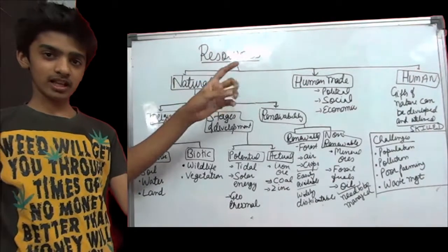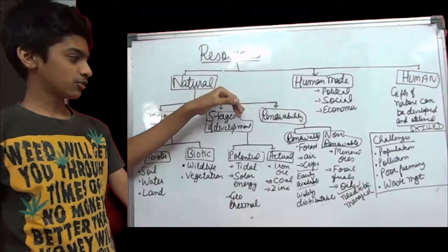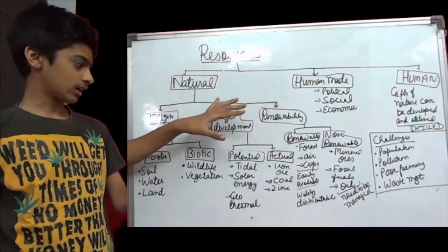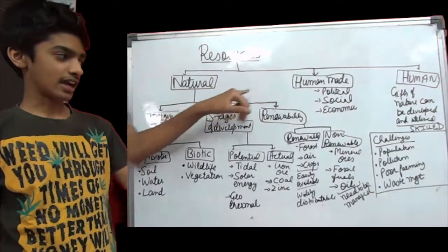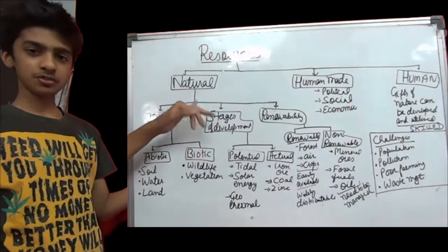Resources can be classified into three types: natural, human-made, and human. In this video, I will tell you about natural resources and some examples of human-made and human resources. So first of all, natural resources.